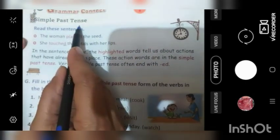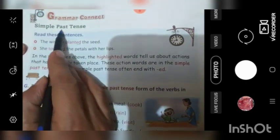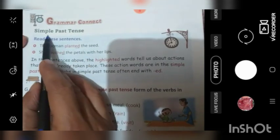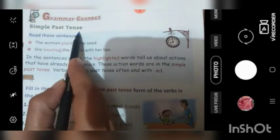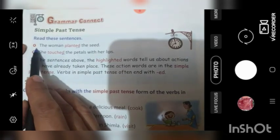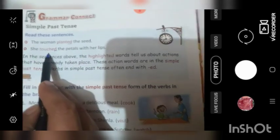Simple past tense. Dear children, this term is new for you. Yeh shabd aap ke liye bilkul naya hai. Isko samajhne se pehle aayye. Ham ye do sentences ko read karte hai.